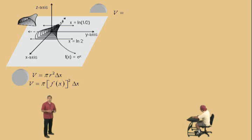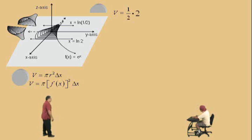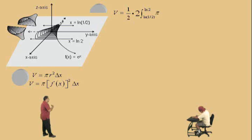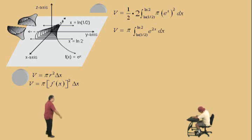Because each individual piece is composed of semicircular cross-sections, our volume is going to be half of a disk — but because we have two of them, we're going to double it. The partitions are moving along the x-axis from natural log of 1/2 to natural log of 2. Our function is e to the x, and we have to square that — that's our r² dx. Obviously 1/2 times 2 is 1. The pi is a constant, so we can bring that out in front. And e to the x raised to the second power is e to the 2x — you multiply the exponents.